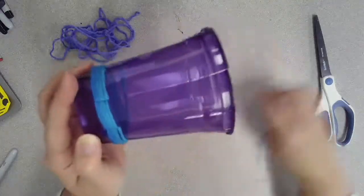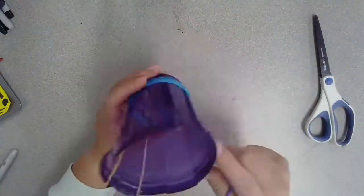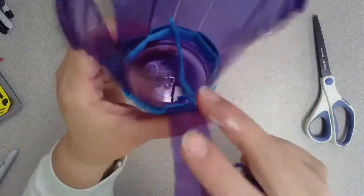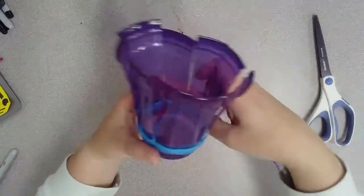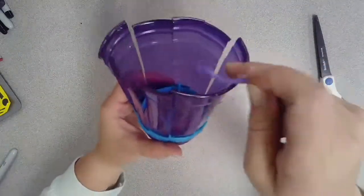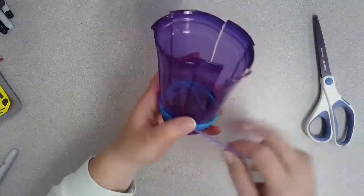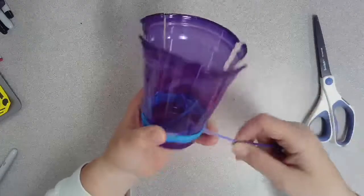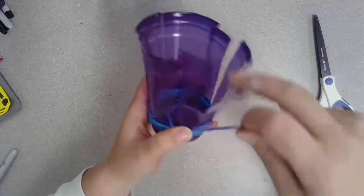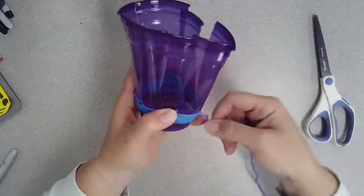When you're ready to start your next string, you can start where you ended the last one. Put it down just like you did the first one all the way down to the bottom of the cup and continue weaving as you did before. Fill the whole entire cup with yarn as you weave.